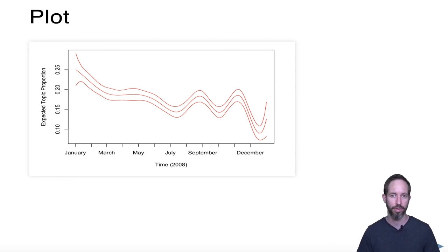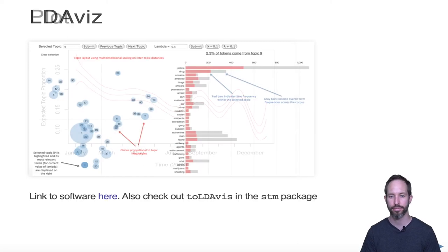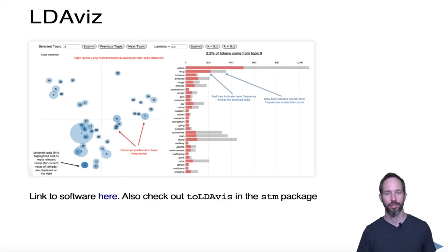You should purposely include metadata that you think might be associated with the distribution of topics, or metadata that you want to look at as predictors of the topics themselves.